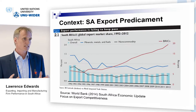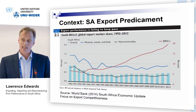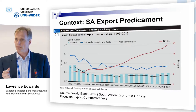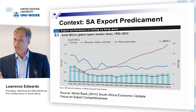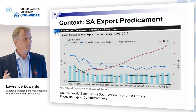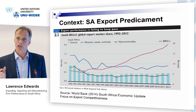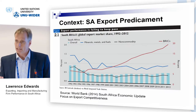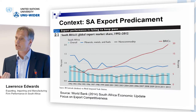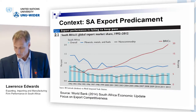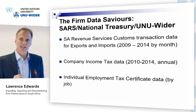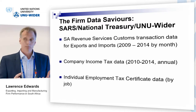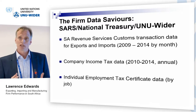The key problem with much analysis up to this point is that we had very little insight into the role that firms played in driving these dynamics, because we didn't have firm data or panel data. There were occasional firm surveys, but we couldn't follow firms over time. What we know from the literature is that firms are extremely heterogeneous, and aggregating them into industries doesn't necessarily make sense. The saviors are UNU-WIDER, the South African Revenue Services, and National Treasury, who came together to make available administered data.